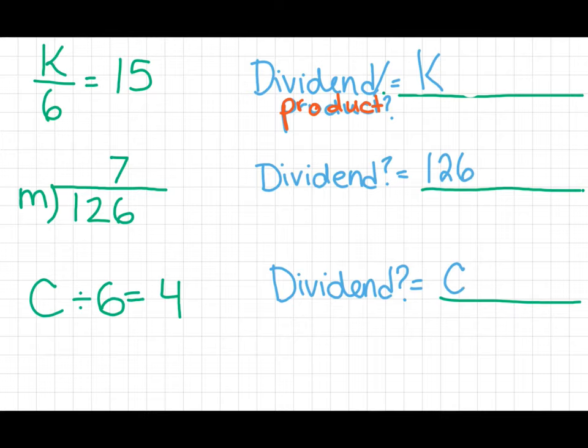How does this help us? So if I know that K, the unknown, is my dividend, it's also my product. So the other two are factors in the multiplication problem. So all I have to do is multiply 15 times 6, and I will get K.